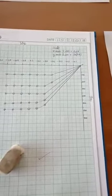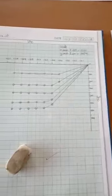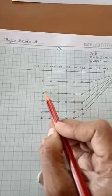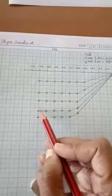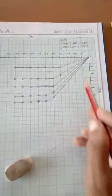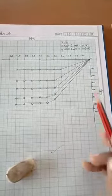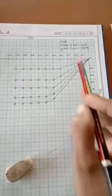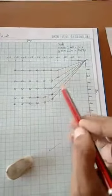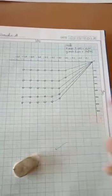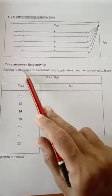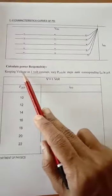If you plot a graph between voltage and current for P_LED = 10, 20, 30, 40, and 50 milliwatts — since it is a reverse bias characteristics, both the current and voltage are taken as negative values. We are plotting the graph and these are the reverse bias characteristics. Now we are going to calculate the power responsivity.